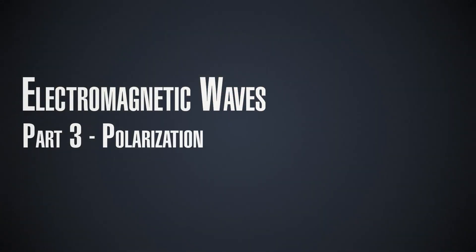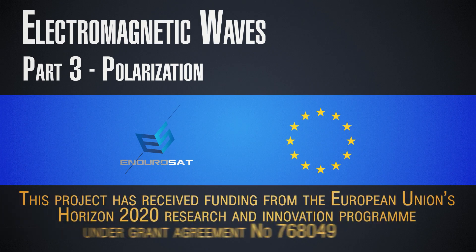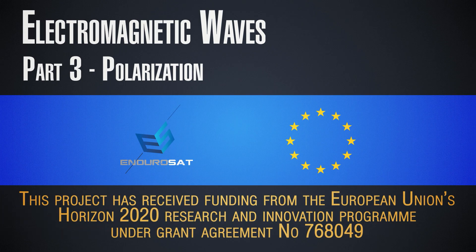One of the most important properties of electromagnetic waves which we have not yet described is known as polarization. You might have heard about polaroid glasses, you might have heard of polarizations of specific materials, but what does this term actually mean and what does it give us in terms of electromagnetic waves and how can we use it for communications?